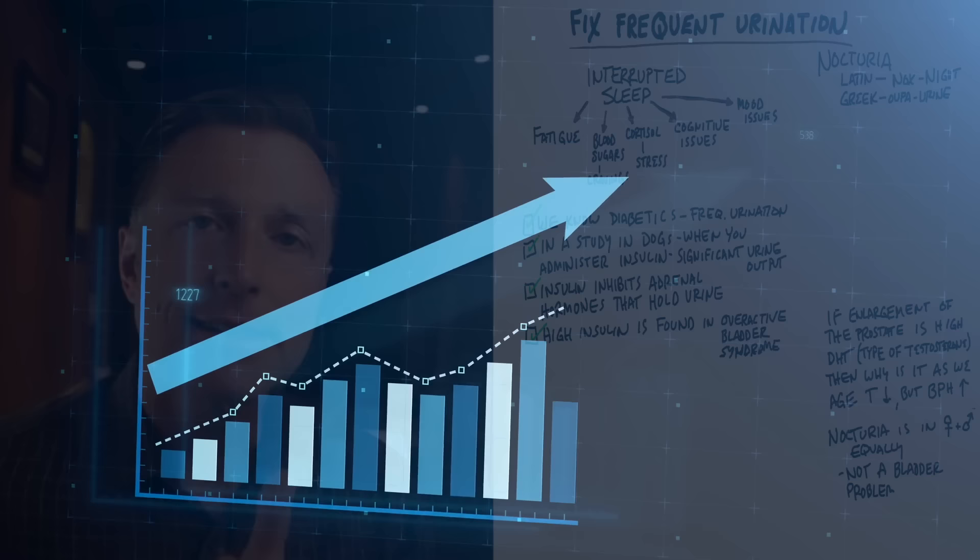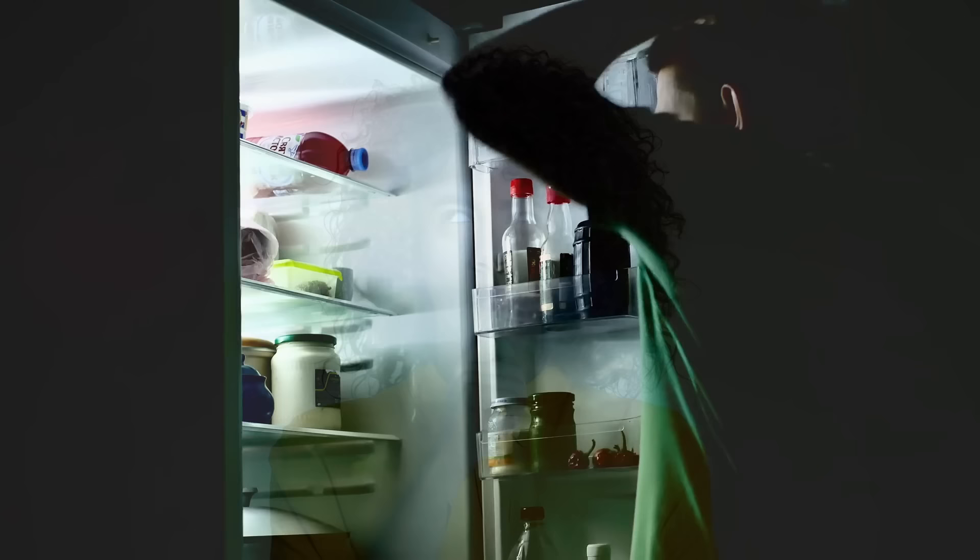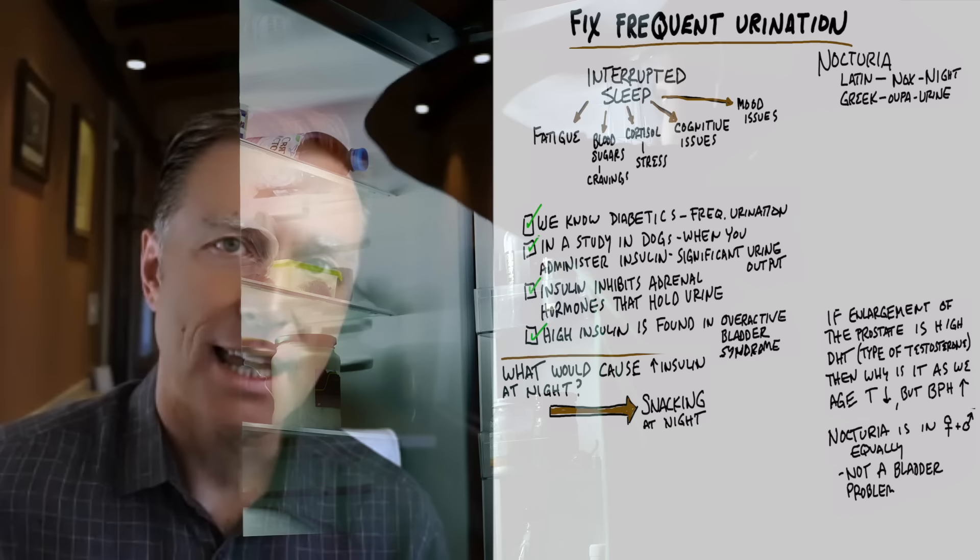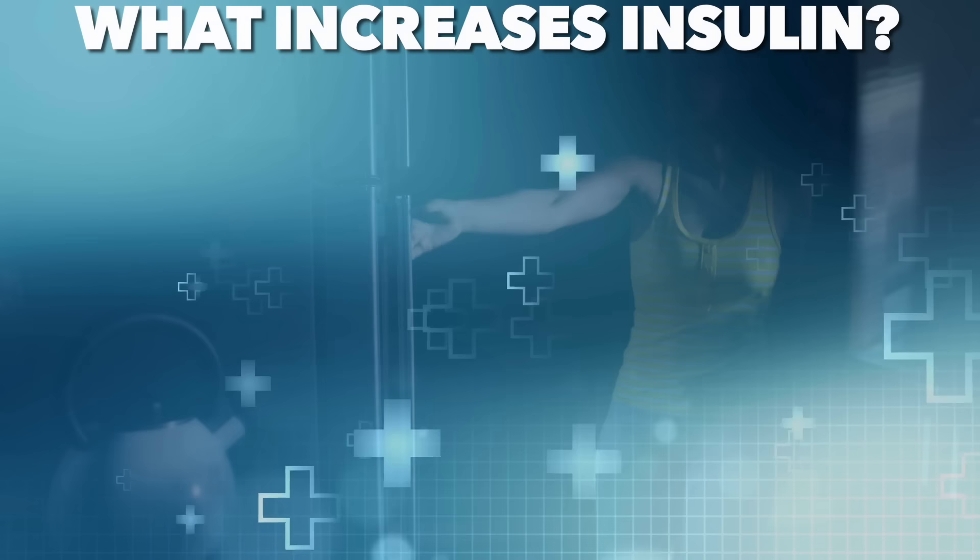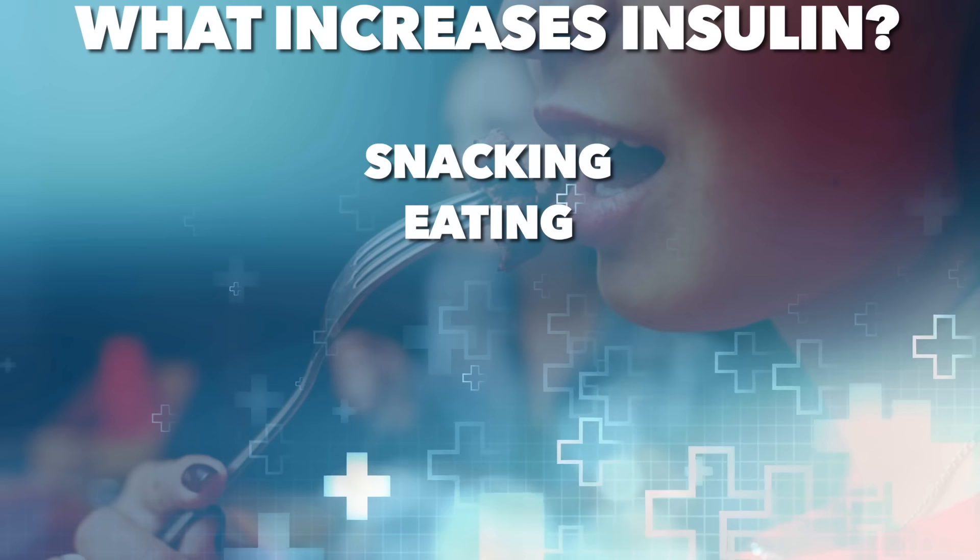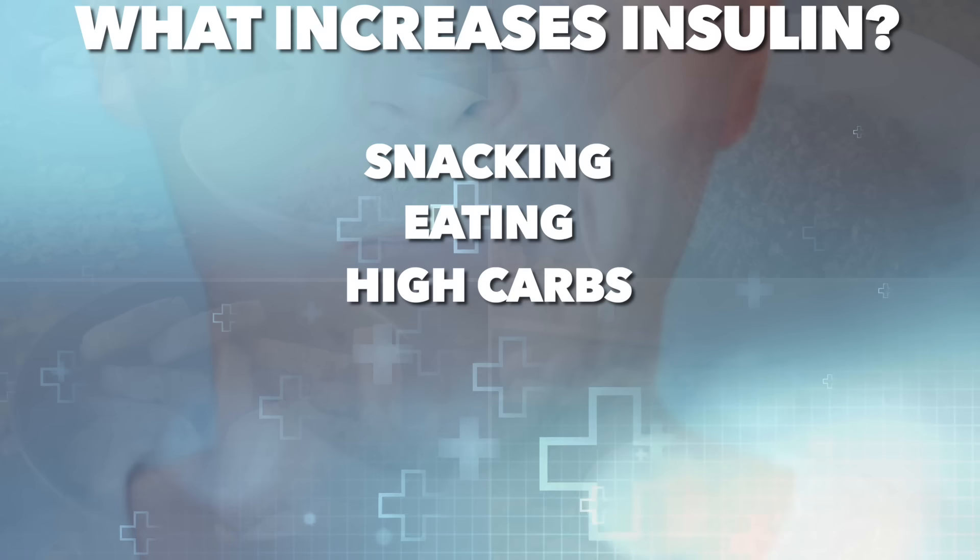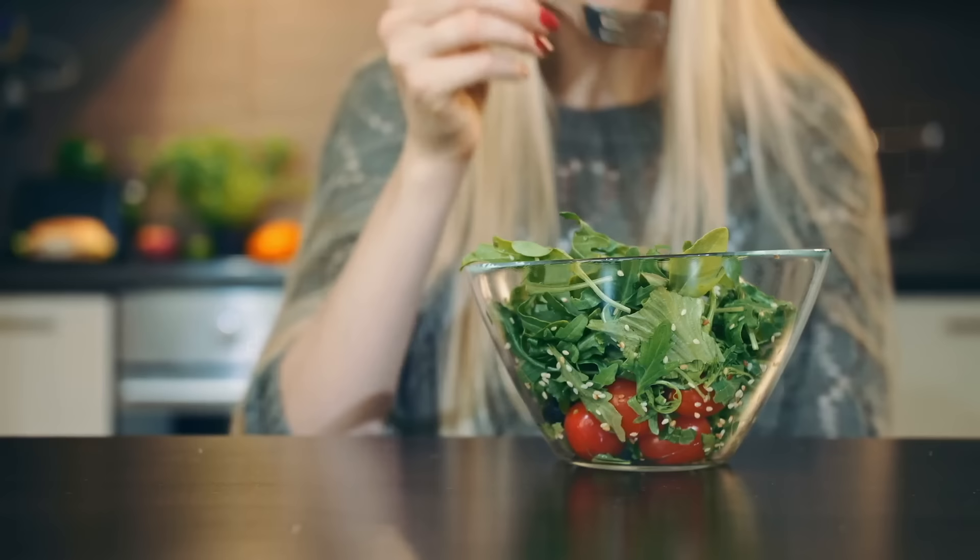So the most likely situation that's causing your urinary frequency is high levels of insulin. So the next question is, what causes high insulin before bed? And the answer is snacking. Snacking at nighttime is the number one reason for high levels of insulin throughout the night. Snacking increases insulin. Eating increases insulin. And so does high carbs. A lot of people know that it's the carbohydrate and sugar that increases insulin, but they don't connect the dot between the eating. So even if someone is consuming a low carb snack, you're still raising insulin.